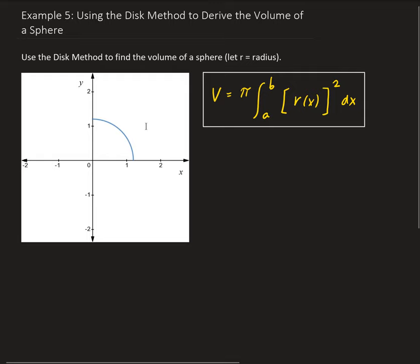So our half sphere is going to look like this. If we rotate this around the x-axis, we end up getting half a sphere. So that's what this formula is going to tell us — this volume. So we have to double our result at the end.